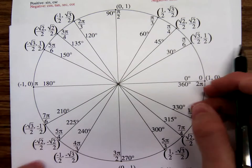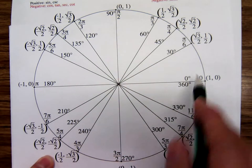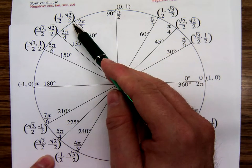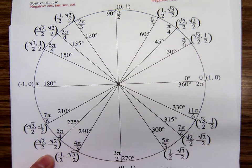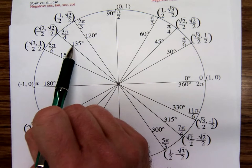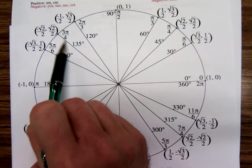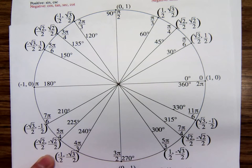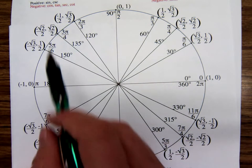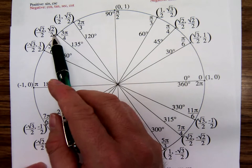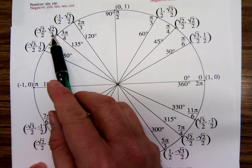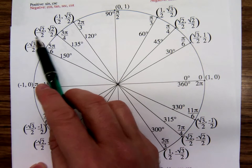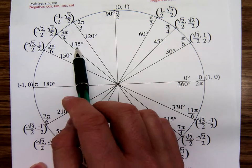We're looking at the unit circle, trying to figure out where is cotangent negative 1. It's not in quadrant 1, it's in quadrants 2 and 4. Would it be at 135 degrees or 3π over 4 and 315 degrees, 7π over 4?